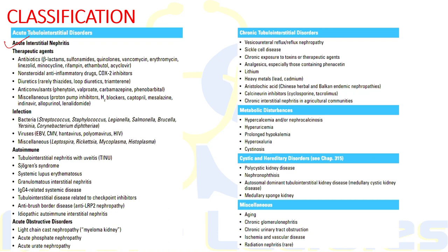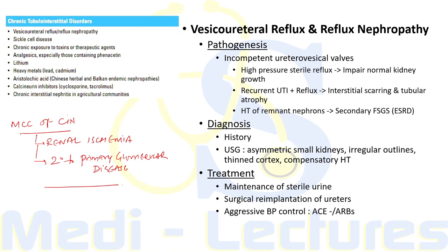After discussing acute tubular interstitial disorders due to therapeutic agents, infections, autoimmune conditions, and obstructive disorders, we now discuss chronic tubular interstitial disorders. The most common cause of chronic tubular interstitial nephritis is renal ischemia or secondary to primary glomerular disorders. Other causes include developmental or inherited disorders such as vesicoureteric reflux and sickle cell disease, and chronic exposure to toxins including analgesics, lithium, heavy metals, aristolochic acid, and calcineurin inhibitors.